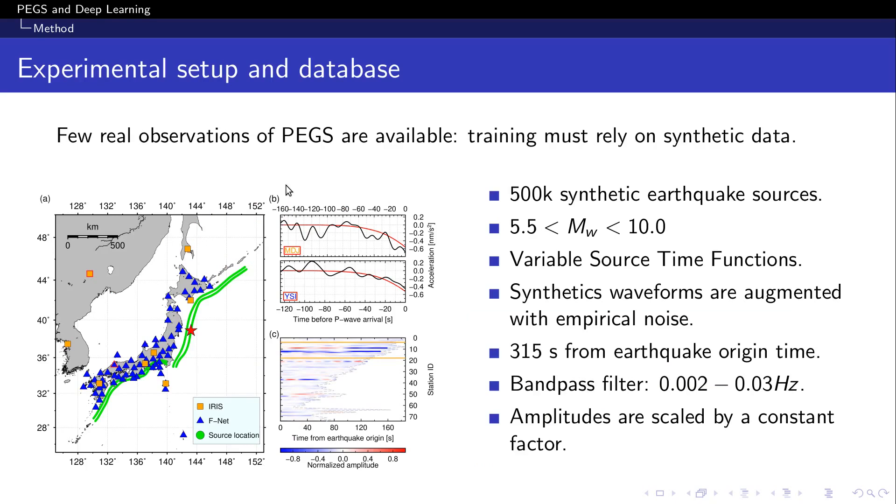So because of the scarcity of real PEGS observations, we can't train on real data and we need to rely on synthetic data. Thankfully, we have computer codes that would allow to simulate waveforms given specific source parameters, and we can build a database of observed waveforms.